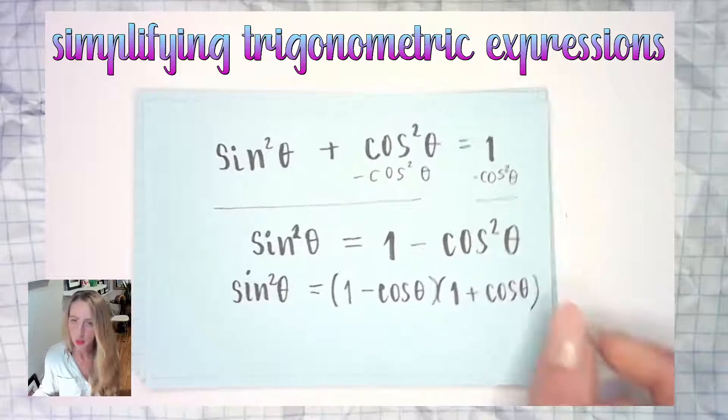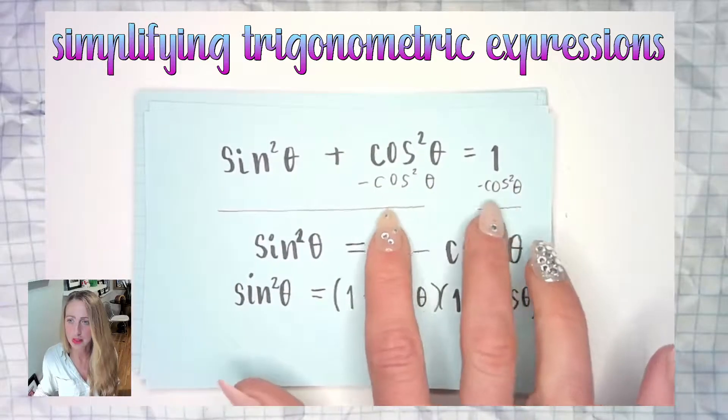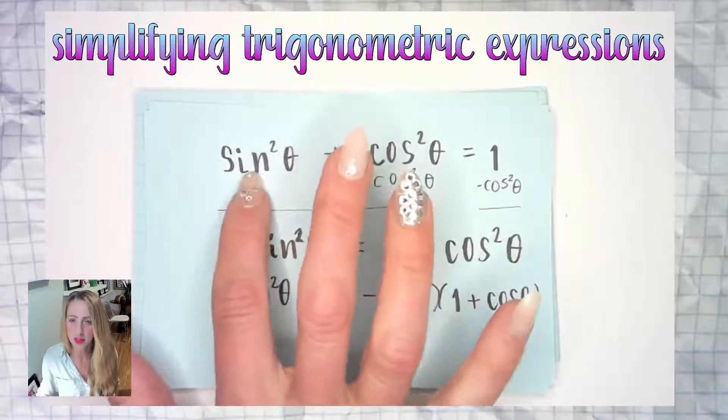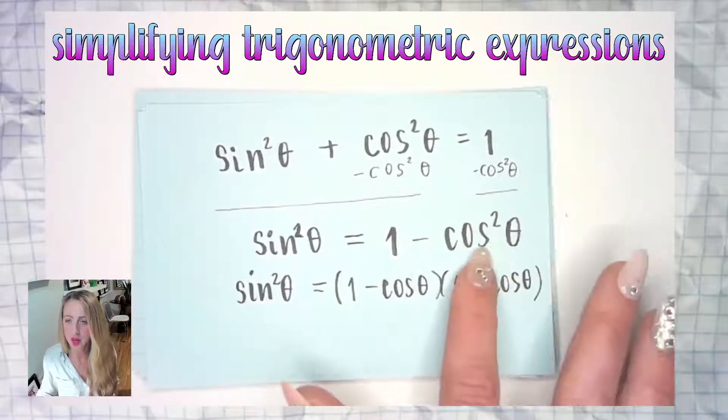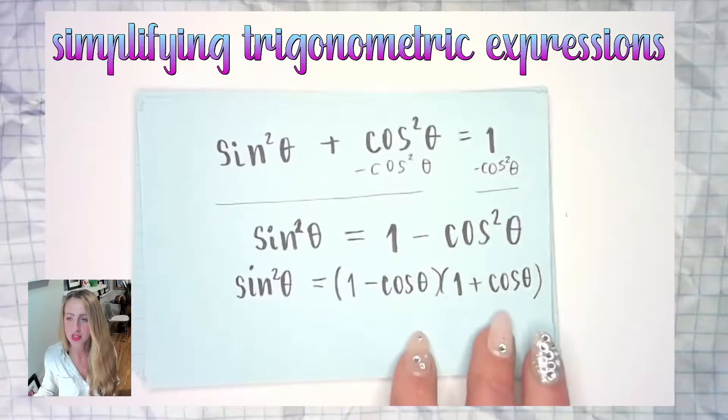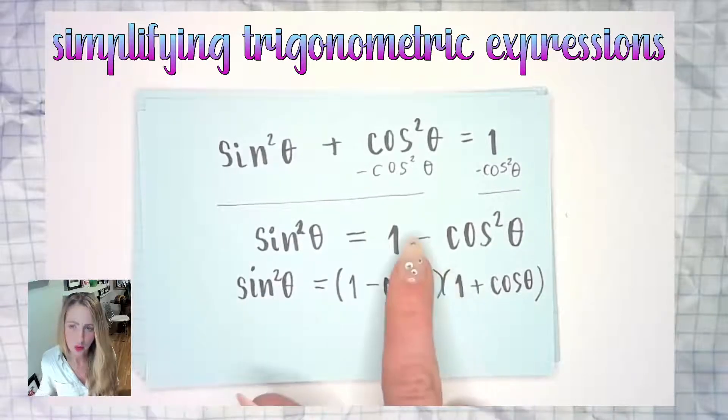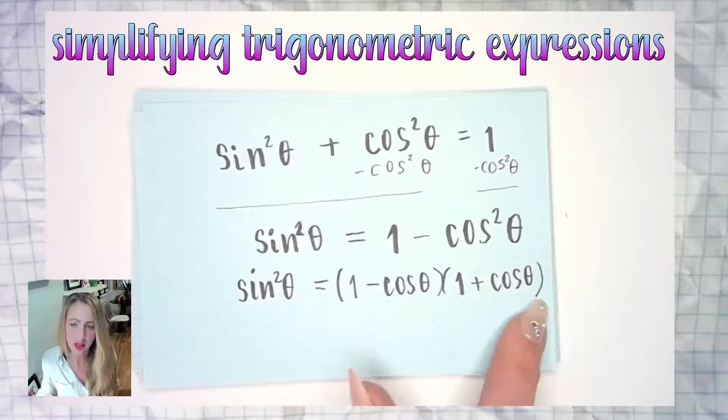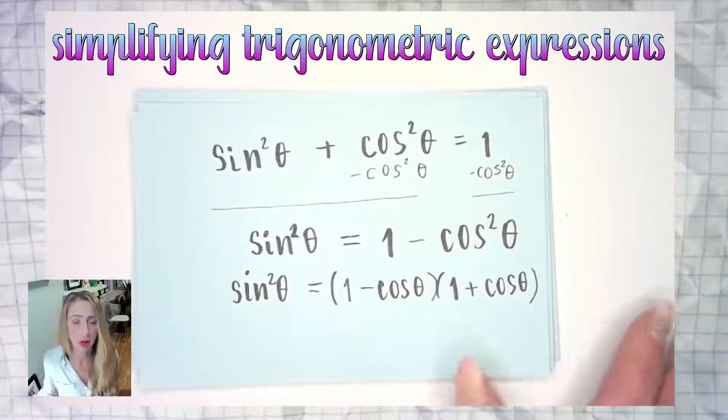I have that already worked out on the back of the card. There's the original problem, subtracted cosine squared theta from both sides to get this alone. Left with this right here which is really what we're going to be focusing on for this example. And just as an extension of it we took the sine squared theta which was 1 minus cosine squared and we factored it. So this is equal to this or this, they're all equal to each other.